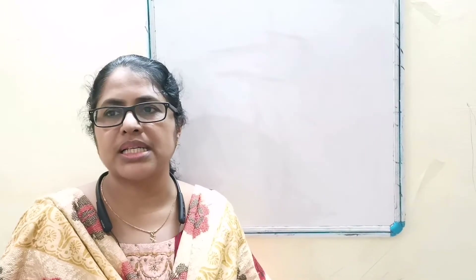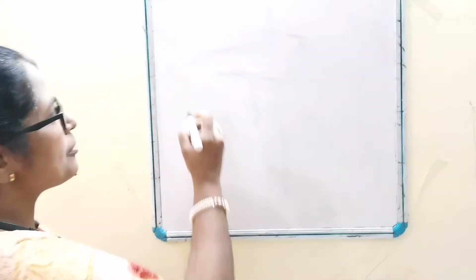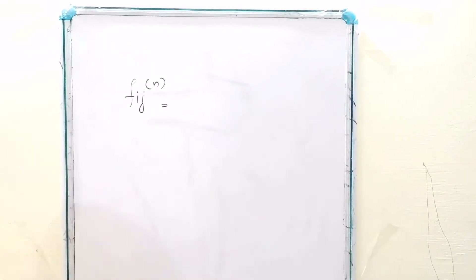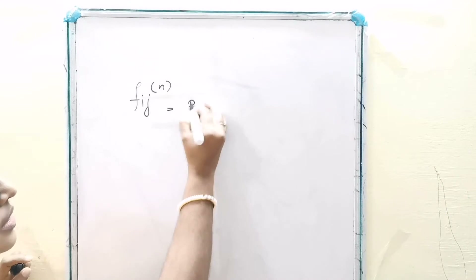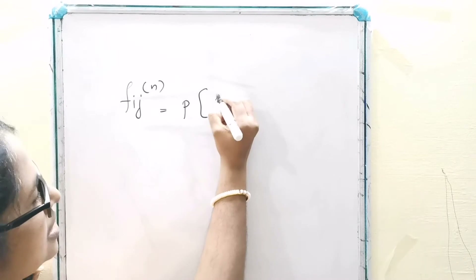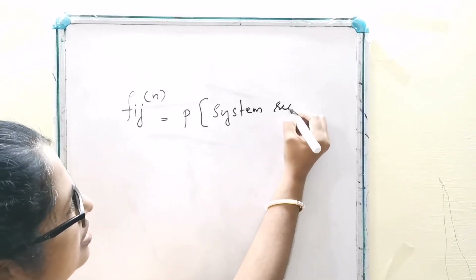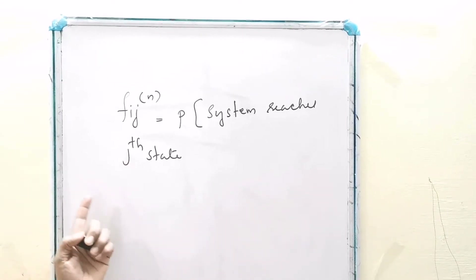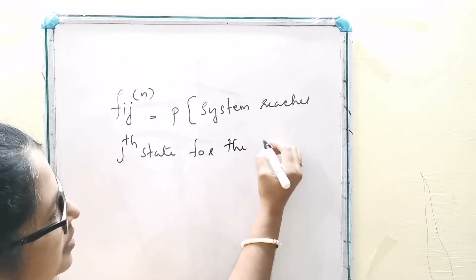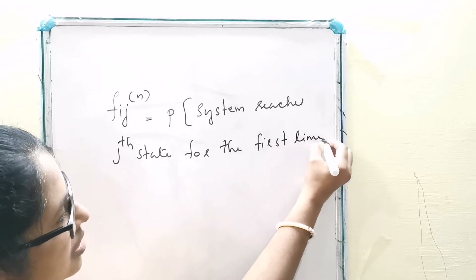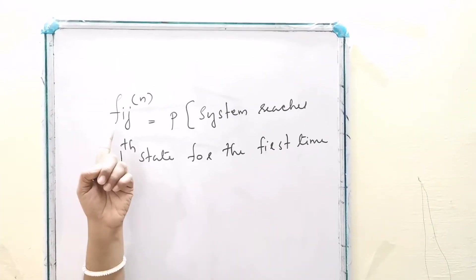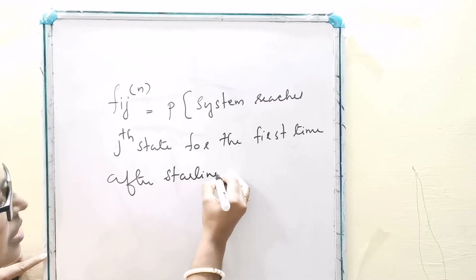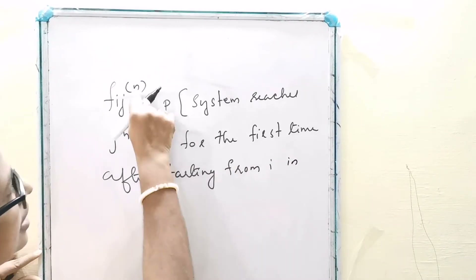An n-step 1st Passage Probability, usually denoted by F_IJN, is the probability that the process reaches state J for the first time after starting from state I in N transitions.